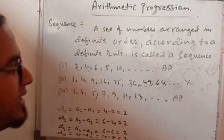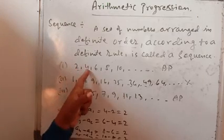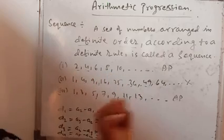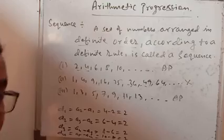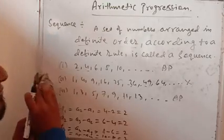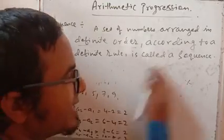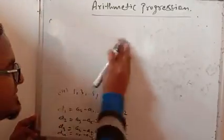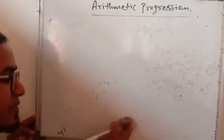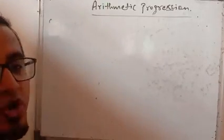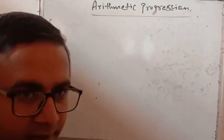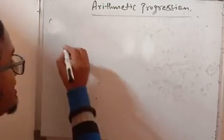So this is the concept of AP. And this is called first term, second term, third term, fourth term. In this way it will go. And now I am writing the formula for general term of an AP. So AP means, again I am telling you, it is a sequence or series of a number in which the difference between the consecutive terms are same, that is common difference are same.